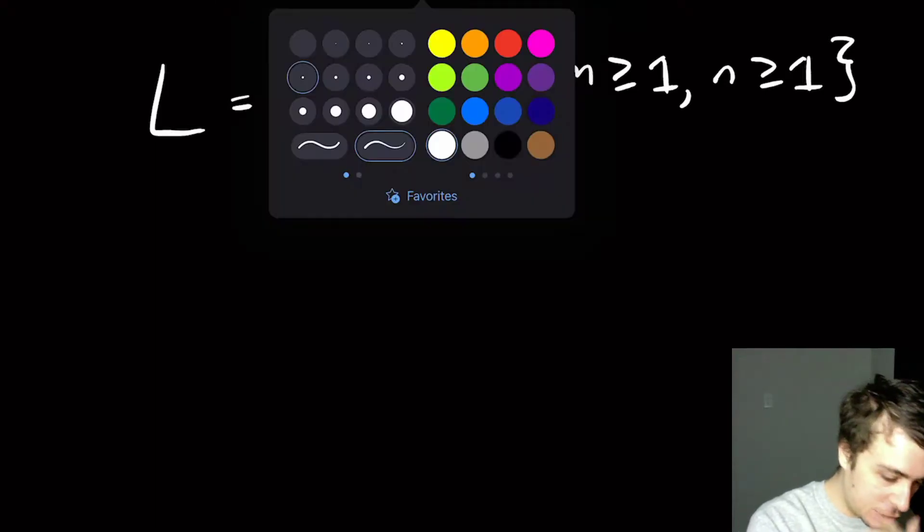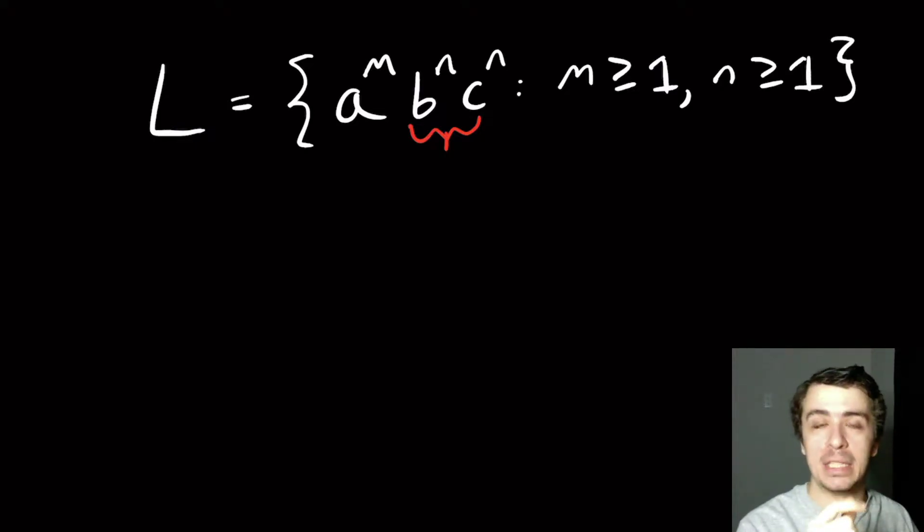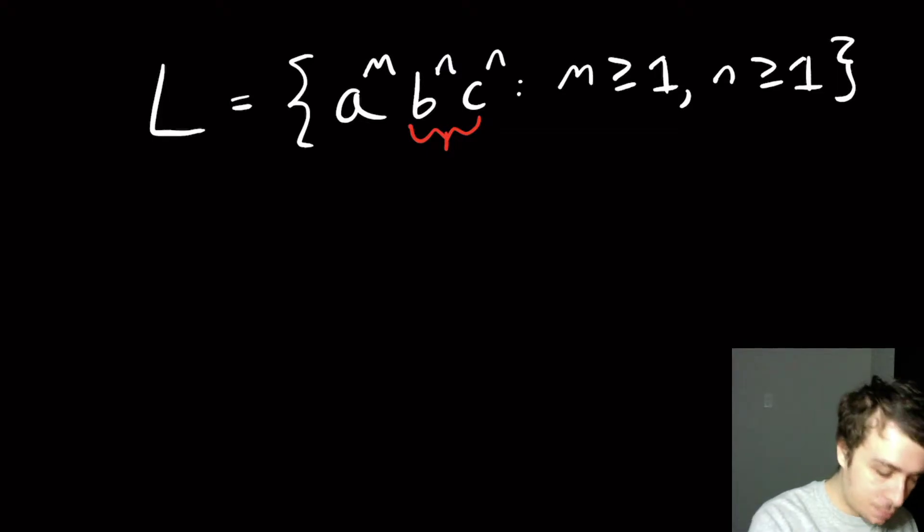And it's pretty clear to see that this thing is not regular because of this segment of b's and c's. It's like 0 to the n, 1 to the n, but it's b's and c's. So L is very clearly not regular.